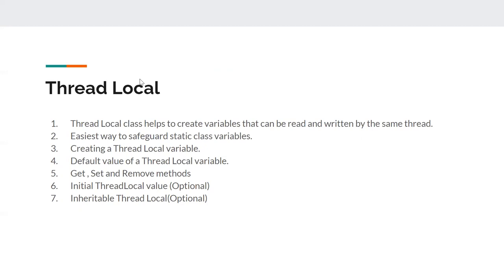We'll understand what is ThreadLocal. This ThreadLocal class helps us to create variables that can be read and written by the same thread only. The thread which sets the value is the only one that can read from it. If some other thread tries to access it, it will not have any access. Even though we maintain only one ThreadLocal variable, it still serves the purpose. It is the easiest way to safeguard static class variables from multiple threads. We'll also see how to create a ThreadLocal variable, what is the default value, and the three methods: get, set, and remove.